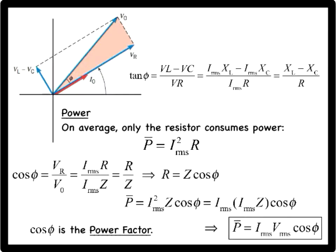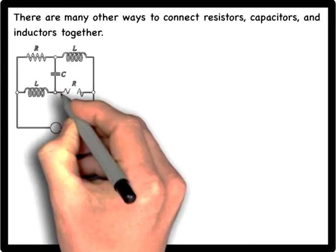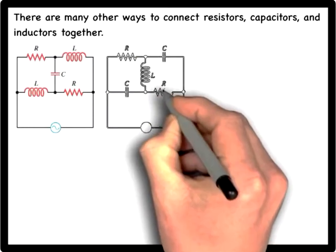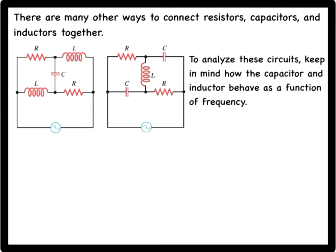In addition to the series RCL circuit, there are many different ways to connect resistors, capacitors, and inductors. In analyzing these additional possibilities, it helps to keep in mind the behavior of the capacitors and inductors at the extreme limits of the frequency.